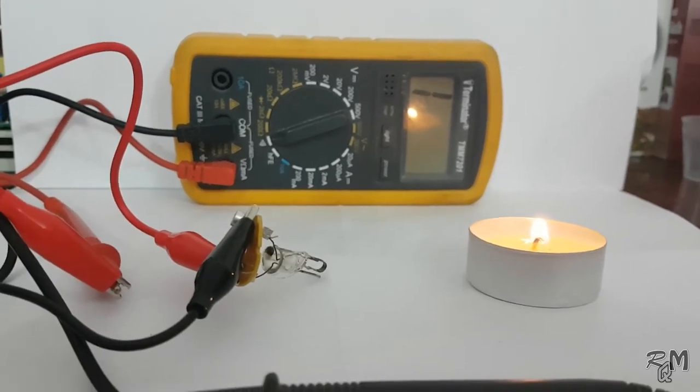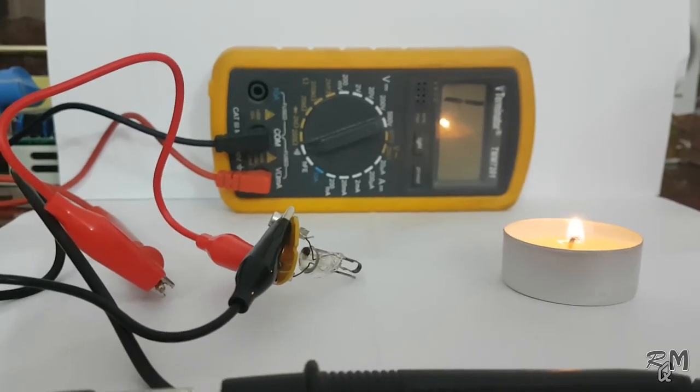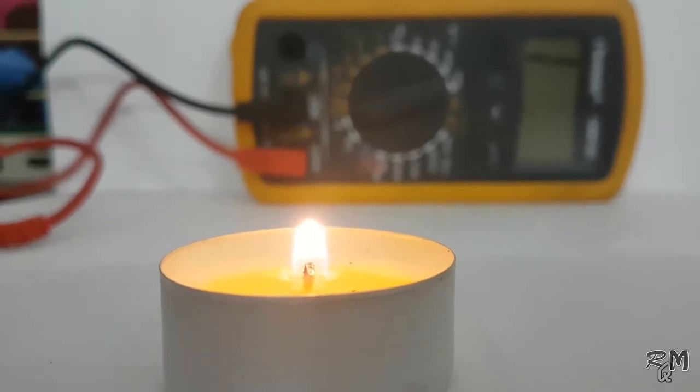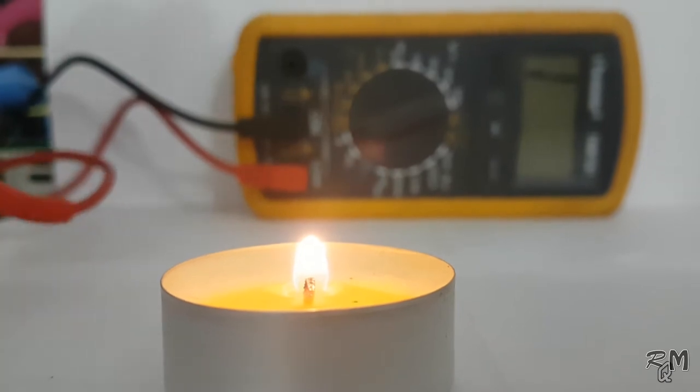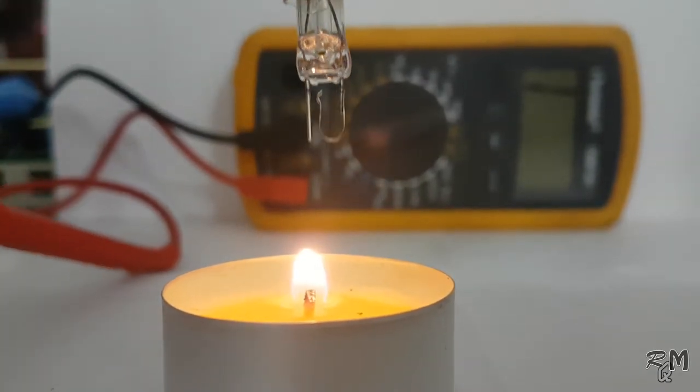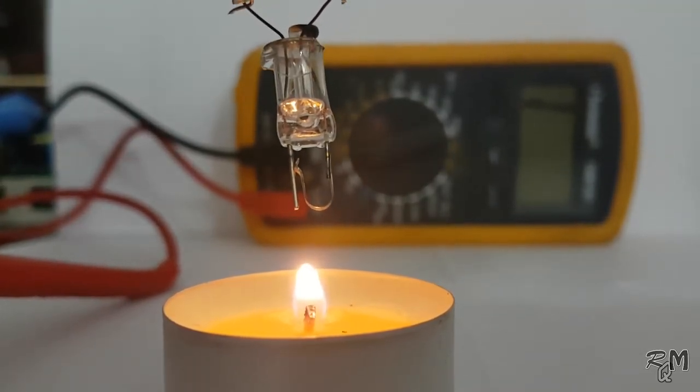You can see currently the multimeter is showing high resistance which represents open circuit. Light up the candle and make sure the candle flame is low. Now bring the bi-metallic contact near to the flame and keep an eye on the resistance reading of the multimeter. It starts to decrease and you can hear the beep sound which shows that the bi-metallic contacts are closed now.